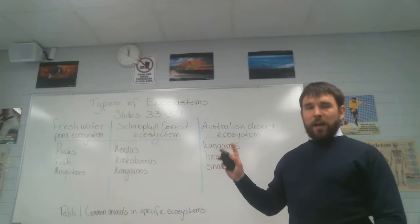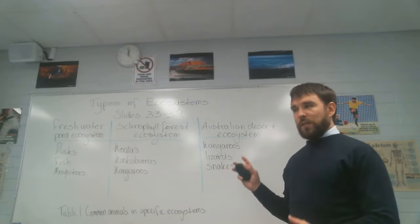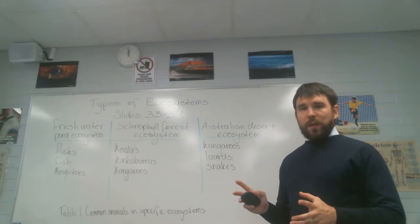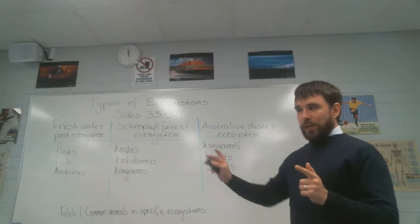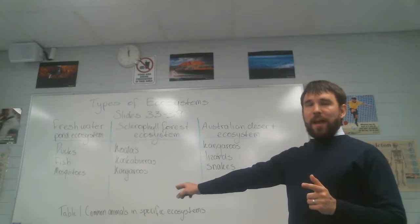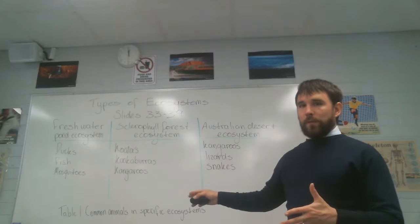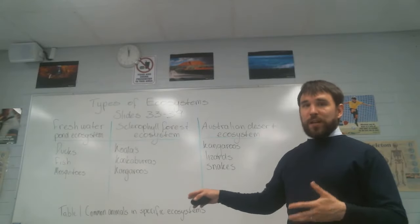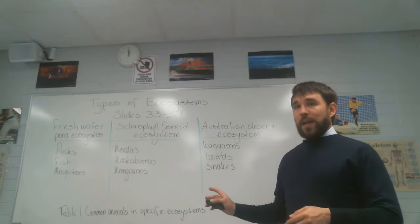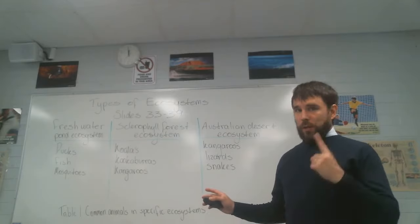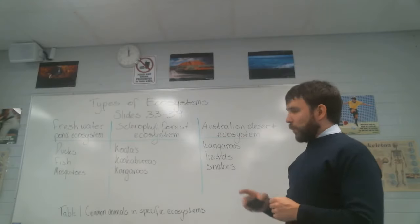On the board, when we draw figures, we always need a label and a descriptive title. At the bottom I have 'Table 1' — because it's a table, not just a figure — and it's the first table drawn, so it gets number one. Then I've described what's in it: 'Common animals found in specific communities or ecosystems.'